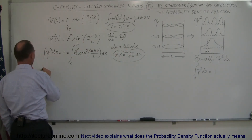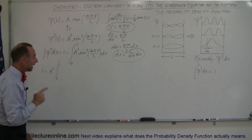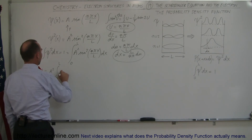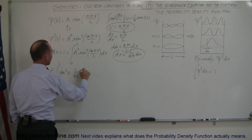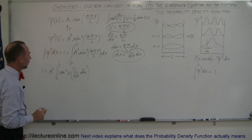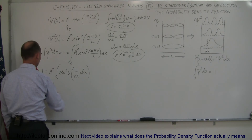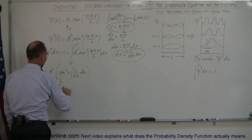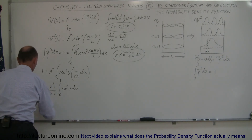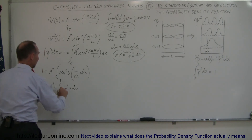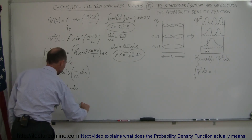Plugging that in: 1 equals a² times the integral from 0 to L — these are x limits, not u limits — of sine squared of u, and dx becomes L over nπ times du. Bringing out the constants, since nπ and L are constants: 1 equals a² times L divided by nπ times the integral from 0 to L of sine squared of u du. Solving that integral gives 1 equals a² L over nπ times one-half u minus one-quarter sine of 2u.